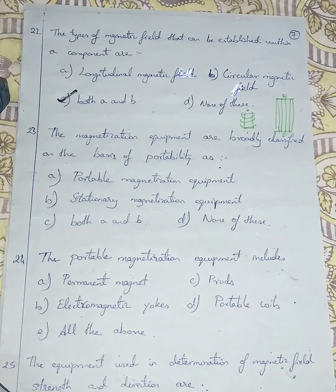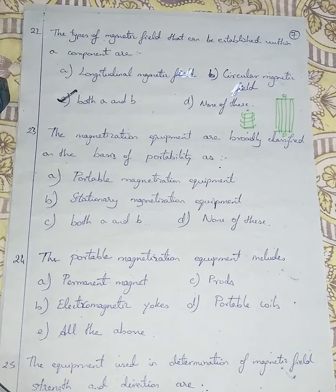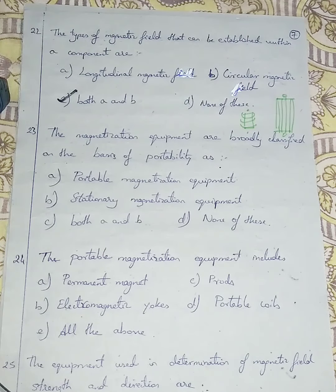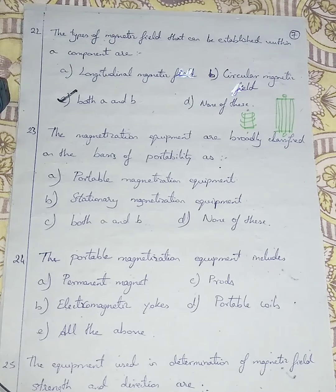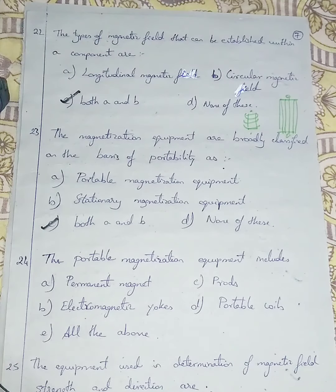Question number 23: Magnetization equipment is broadly classified on the basis of portability. Portability means whether we can move the equipment or not. One type of equipment can be moved - portable - and the other has to be stationary as it is too heavy to move. So the two types are portable magnetization equipment and stationary magnetization equipment. I am going with both A and B.